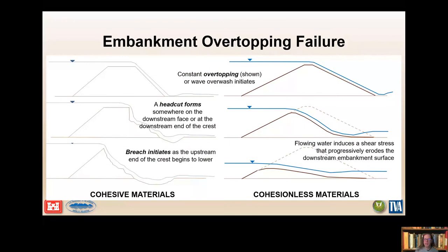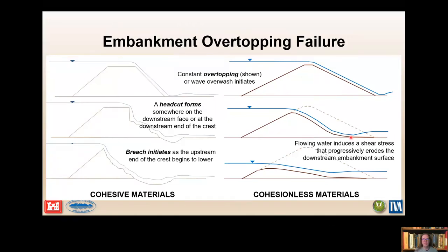The breaching mechanism shown on the left is a head-cutting failure. Notice the vertical face of the head-cut that forms due to the presence of cohesion in the embankment materials. Both figures start with water flowing over an embankment crest. The figure on the right shows erosion and breach mechanism typical of cohesionless granular materials. Both may be applicable if a dam has a cohesionless shell and a cohesive core, as is usually constructed.